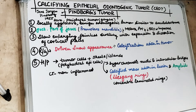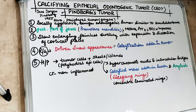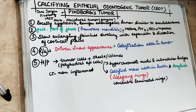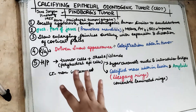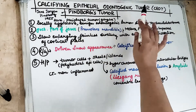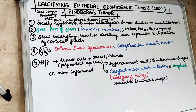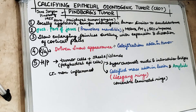Welcome back to another 5-in-5 series, where we cover each topic under 5 headings in 5 minutes. Today's topic is CEOT. We have already covered CEOC, which is the calcifying odontogenic cyst. Now it's time to study the calcifying epithelial odontogenic tumour, also known as the Pindborg tumour, since it was first reported by the Danish pathologist Jens Jørgen Pindborg in 1955.